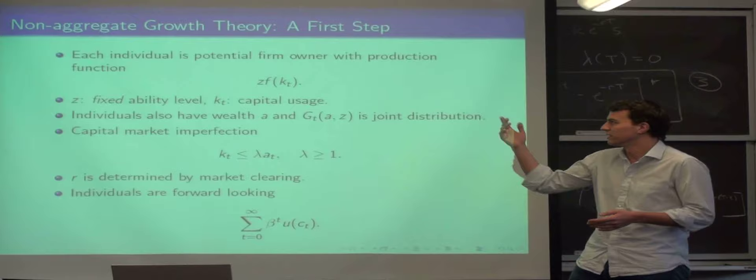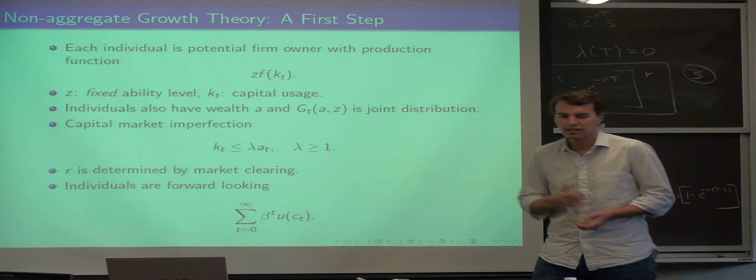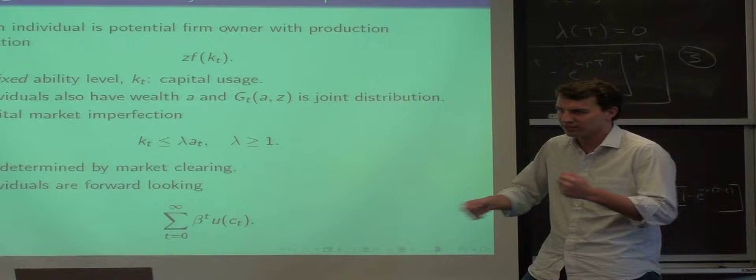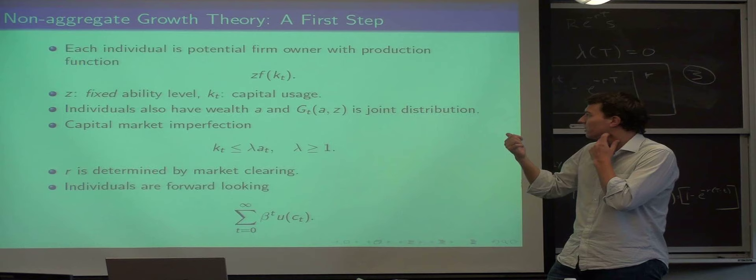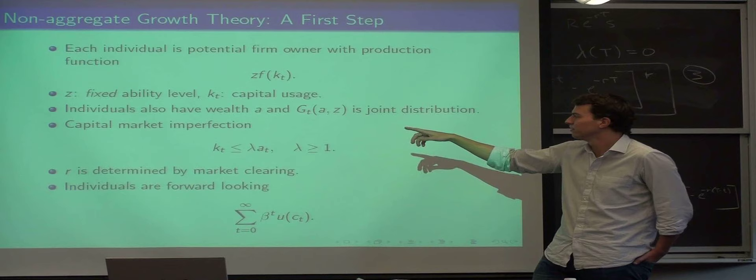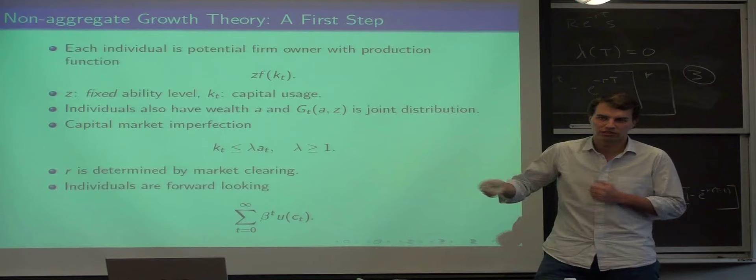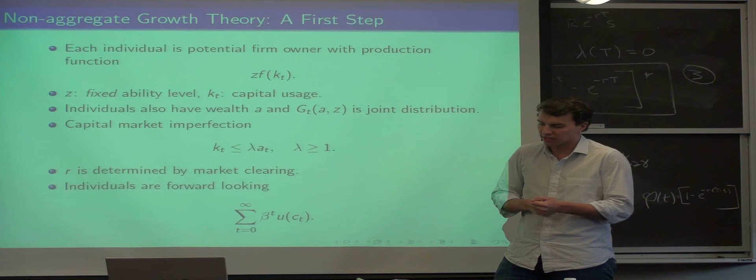A bunch of people have said, how do we deal with this? They've come up with something which people call non-aggregate growth theory, or heterogeneous agent models. The idea is just that you somehow build in heterogeneity in the economy. Each individual is a potential firm owner with a production function. Also, individuals have some wealth, and we write G of A and Z as the joint distribution at time T.